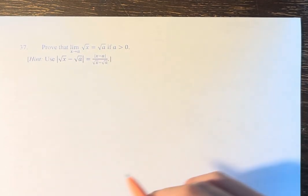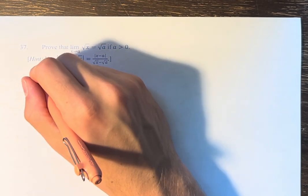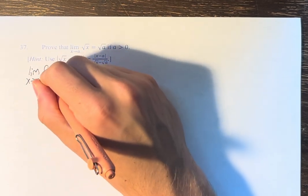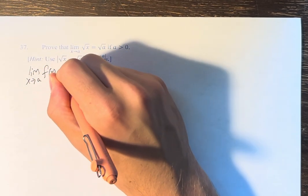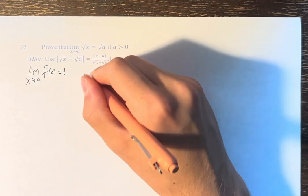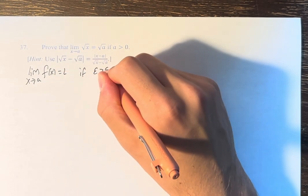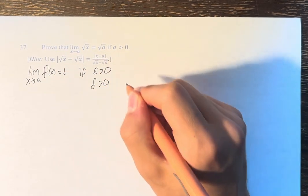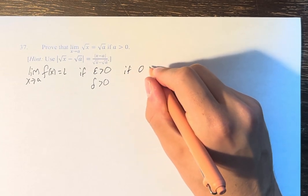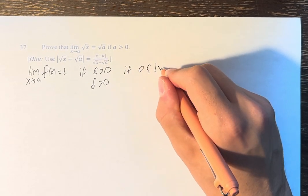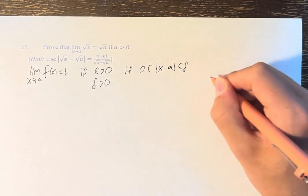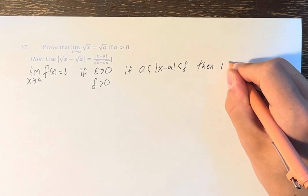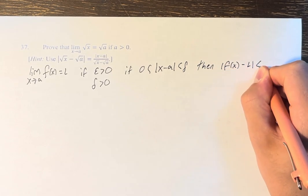We're going to use the precise definition of the limit, which states that the limit as x approaches a of f(x) equals L, if for every epsilon greater than 0, there is a delta greater than 0, such that if 0 is less than the absolute value of x minus a is less than delta, then the absolute value of f(x) minus L is less than epsilon.